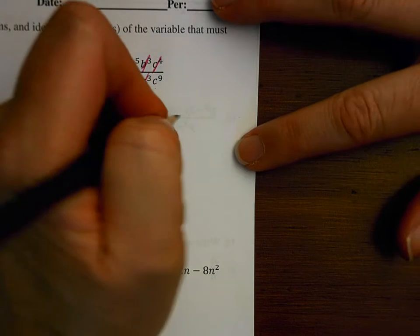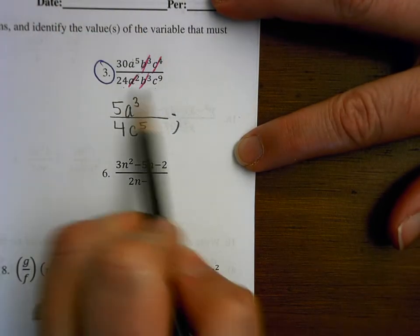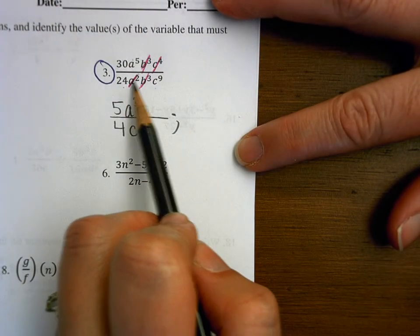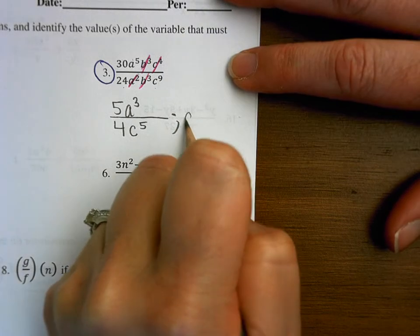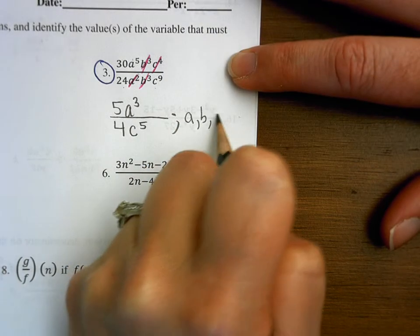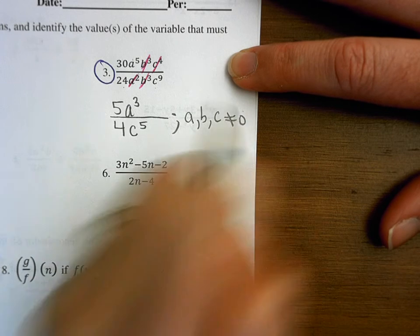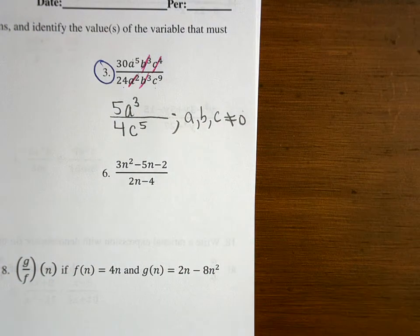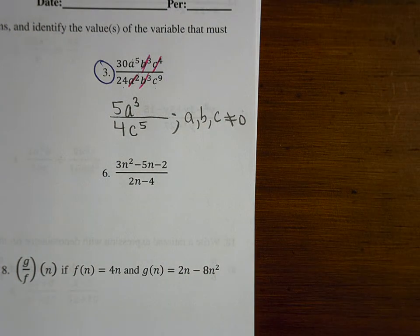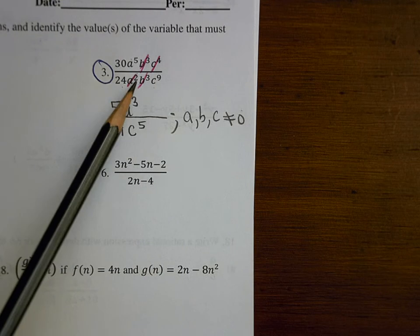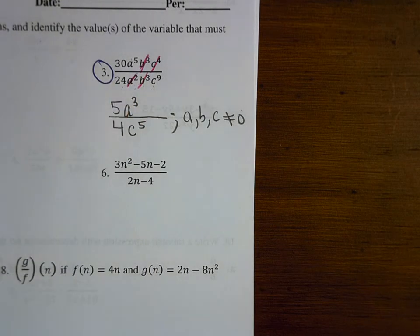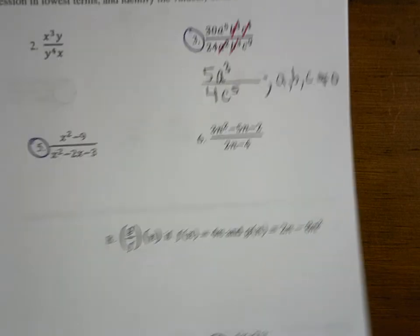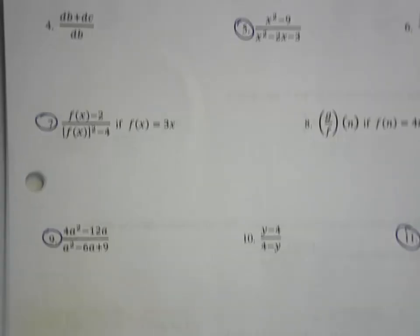For the excluded values: when it's just a product, none of the variables can be zero. So a, b, and c cannot equal zero. Excluded values just means when the denominator is zero — if a, b, or c were zero we'd be dividing by zero, and we don't want that.